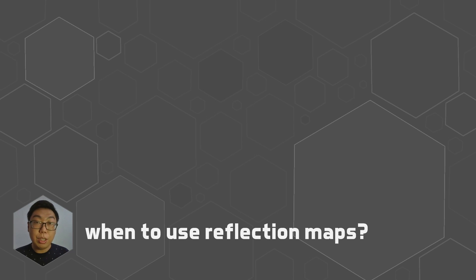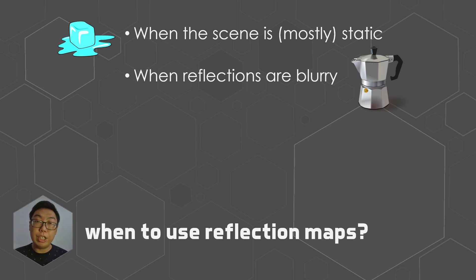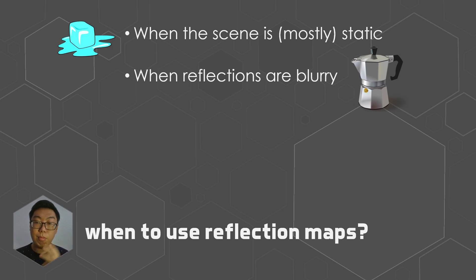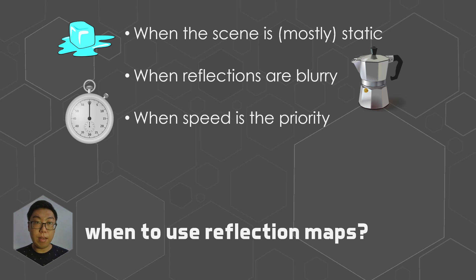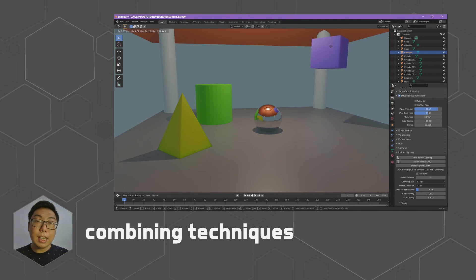So when do we actually want to use reflection maps? There are a few times when it makes more sense. For example, if we know for sure that the scene is static. Or if we know that reflections are blurry — you'll notice that we can recognize a reflective surface, but you're not explicitly seeing the scene very clearly. That's when it's a rougher surface: a blurrier reflection means you can get away with slightly imprecise reflections. Apart from that, if you really need speed, you may have to give up a little bit of quality. Or the final alternative — the more interesting one — is if you're going to be using a combination of strategies to achieve a reflective effect.